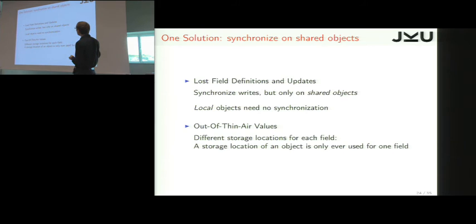And this actually solves our three problems. For the lost field definition and update, what we do is simply synchronize on write with mutual exclusion. We do this on an object granularity. Of course, for local objects, we need nothing. And then for the out-of-thin-air value, we need to think a bit more like, how can we represent it so we don't get values of another field.